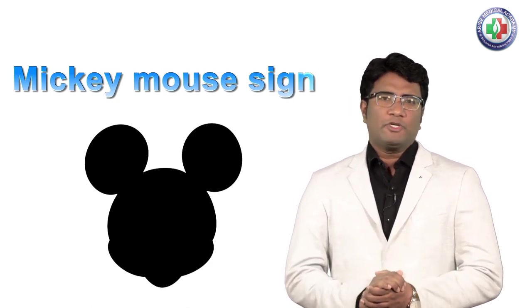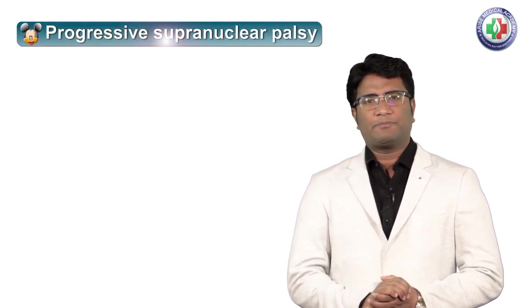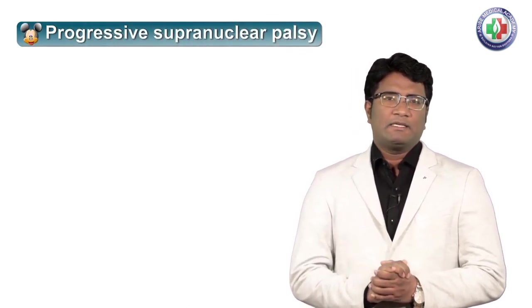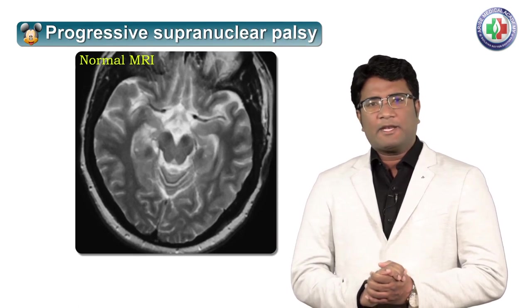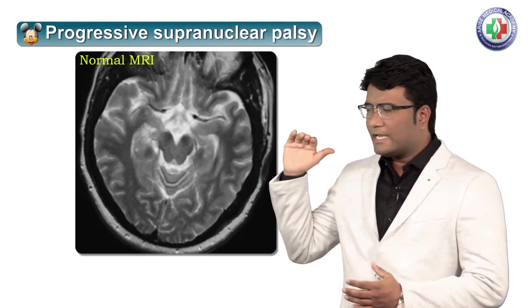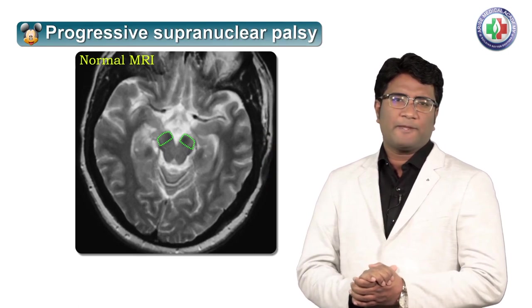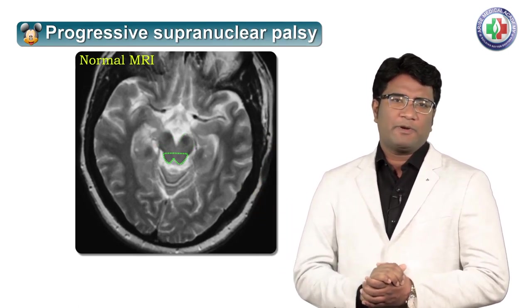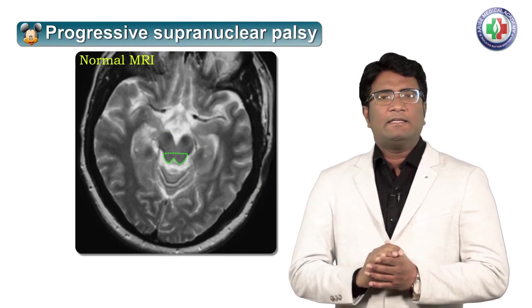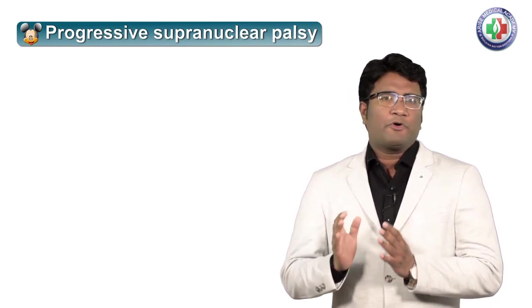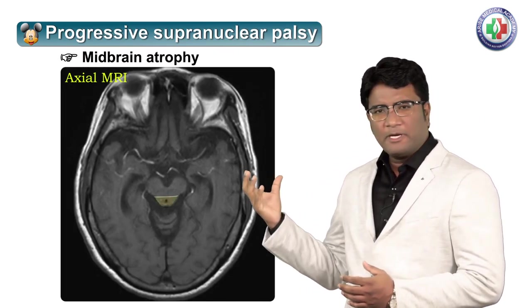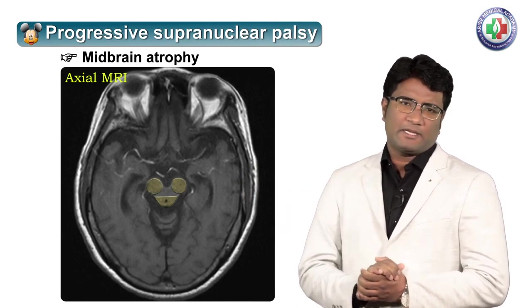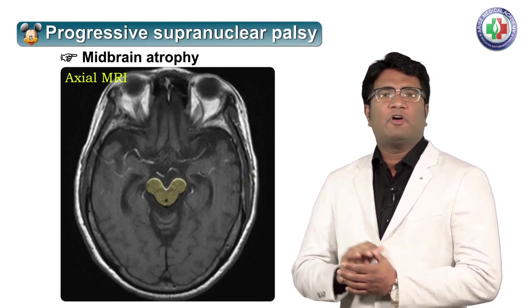The first place to remember the Mickey Mouse sign is progressive supranuclear palsy. Progressive supranuclear palsy is associated with midbrain atrophy. On a normal axial MRI of the brain, it shows healthy crura cerebri — the squarish crura cerebri — as well as the tectal area of the midbrain. In progressive supranuclear palsy, the atrophic midbrain and the rounded crura cerebri take the shape of a Mickey Mouse.